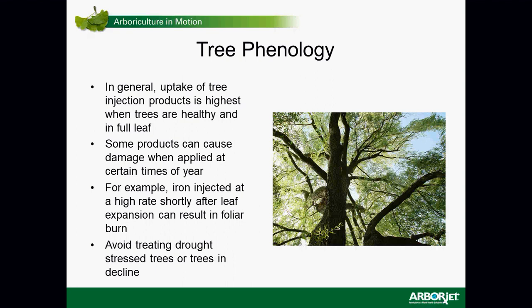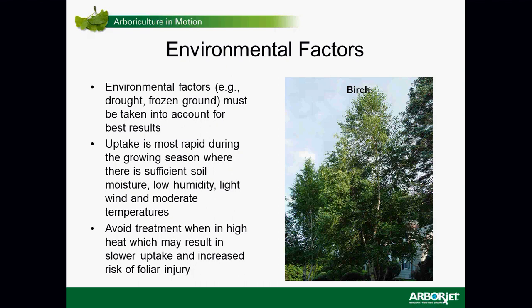Avoid treating drought-stressed trees or trees in decline — you have to make a judgment as a professional about the tree's value and whether it's worth treating. Environmental factors: if there's no available moisture — as with drought or frozen ground — you won't get much transpiration, and transpiration is the driver that moves liquid hydraulically up through the canopy. Uptake is most rapid with sufficient soil moisture, low humidity, light wind, and moderate temperatures.